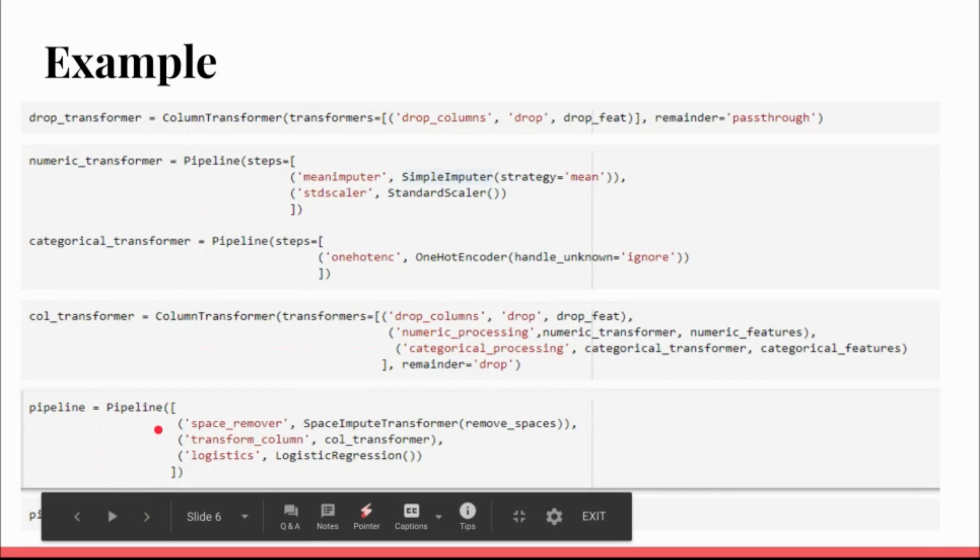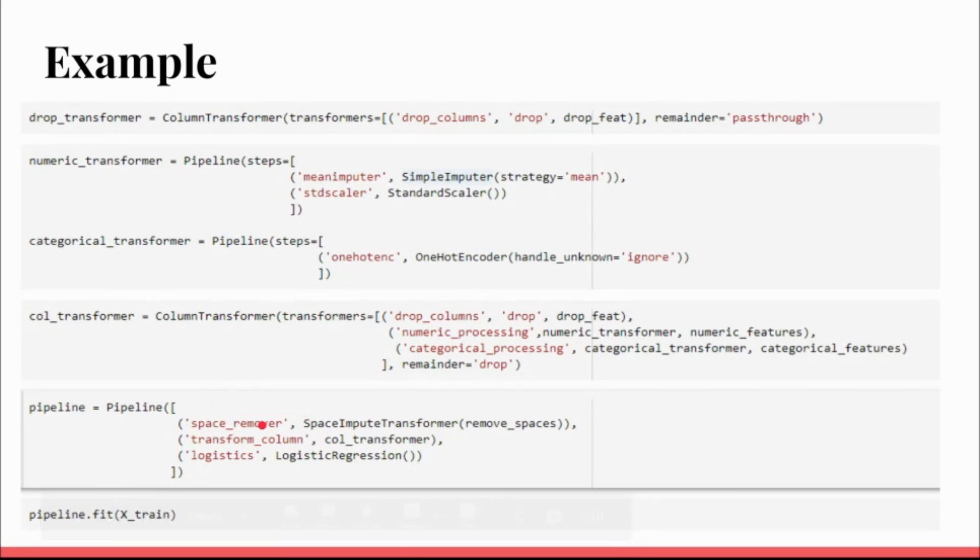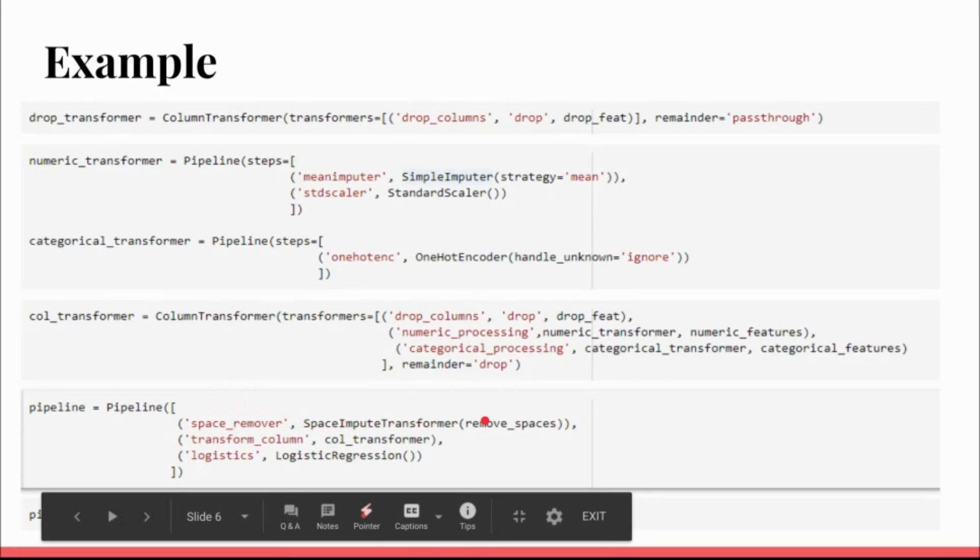Then I create my final pipeline. I'm putting my transformer object, the space remover is another custom function that I have written. I will go into detail in my next video. But this is a custom function to remove spaces in the data. And then this is the column transformer that I created on the top. And finally I have a logistic regression. So I have all this pipeline fit together.